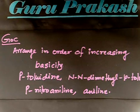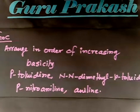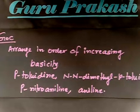Now in this case we have to arrange the following compounds in order of basicity. Let us try, you can do this. You have para-toluidine and N,N-dimethyl-para-toluidine.